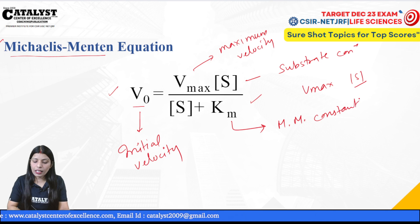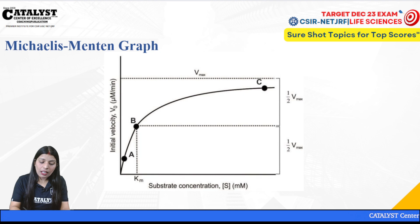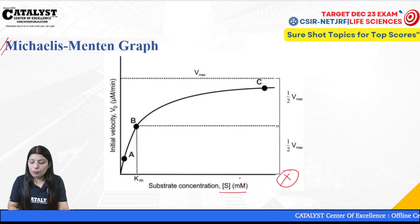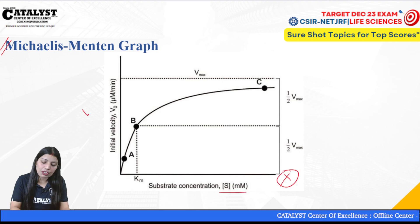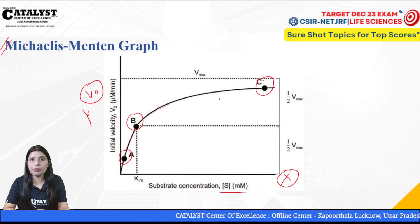In the Michaelis-Menten graph, on the x-axis you can see the substrate concentration, and on the y-axis the velocity. This gives you a hyperbolic graph, which can be explained in three different points on the velocity curve.